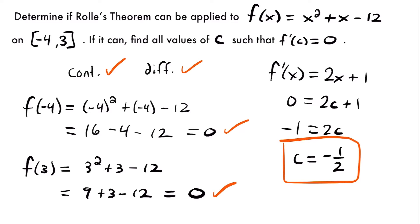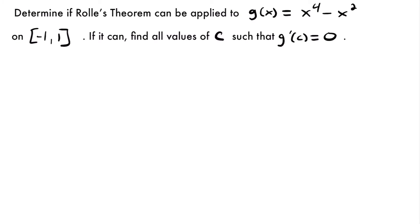Let's look at another example. We have g(x) = x⁴ - x² on the interval from -1 to 1, and we want to find all values of c such that g'(c) = 0, if Rolle's theorem can be applied.